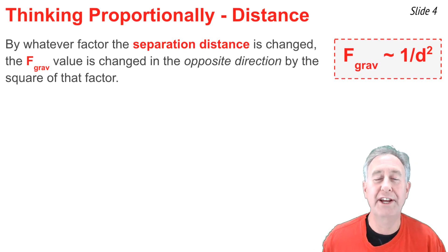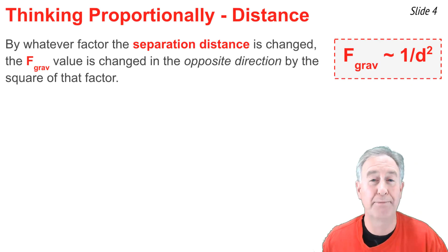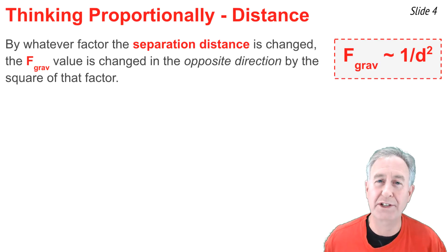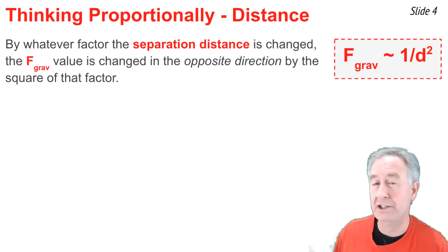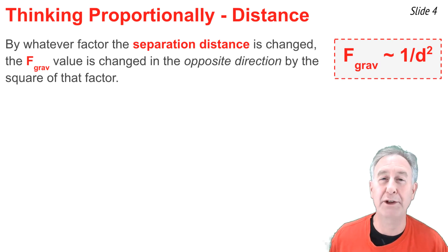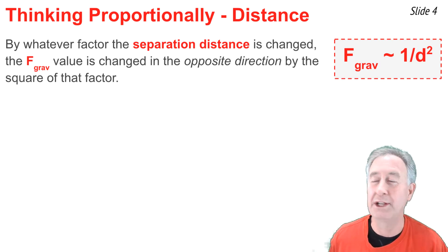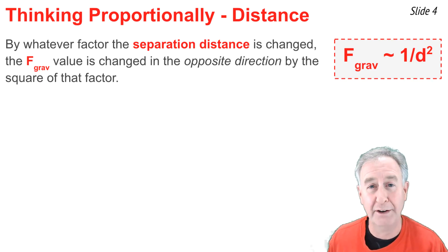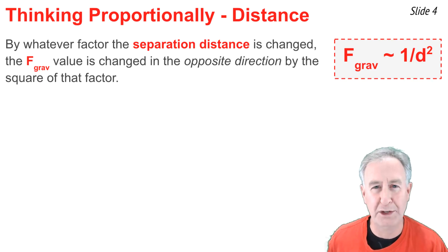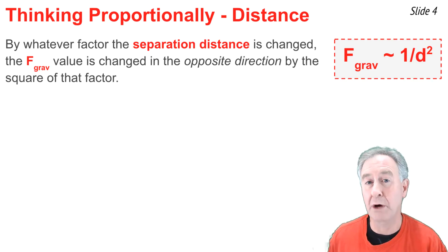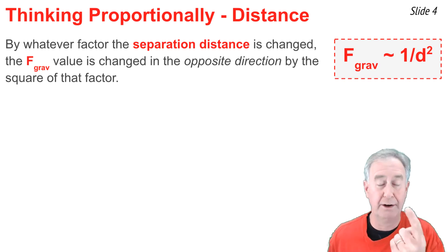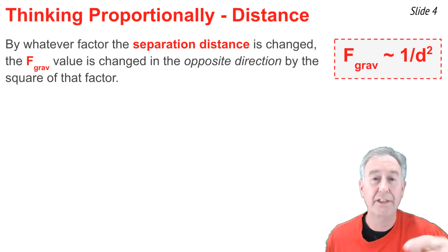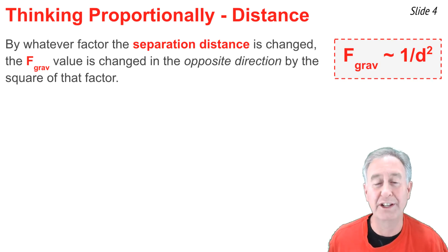Newton's law is all about proportionality statements — one for mass and one for distance. When it comes to distance, the proportionality statement claims that by whatever factor the separation distance is changed, the F-grav value is changed in the opposite direction by the square of that factor. If the distance got smaller, the F-grav would get bigger; if the distance got bigger, the F-grav would get smaller. They change in the inverse direction.